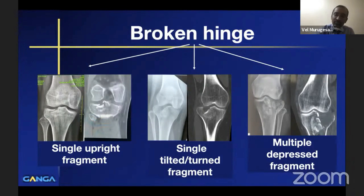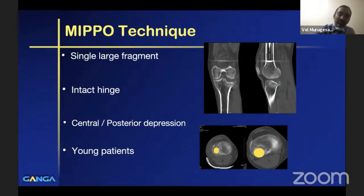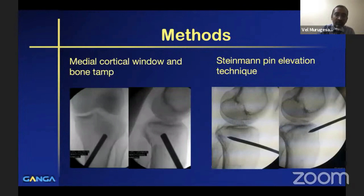There can also be multiple depressed fragments. For minimally invasive techniques, there are various ways to elevate. One technique can be applied when there is a single large fragment with an intact hinge and the depression is either central or posterior. It is usually done in young patients with good bone quality, by two methods: either a medial cortical window using a bone tamp, or a stem-and-pin elevation technique.